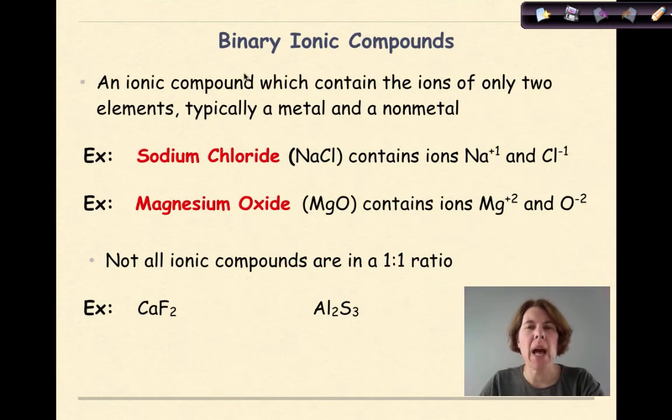Now let's talk about binary ionic compounds. And if you look at the word binary, the prefix bi means two, and then ionic means ion, and then a compound. So basically what we see here is two different types of ions coming together to form a compound. An ionic compound, which contains the ions of only two elements, typically a metal and a nonmetal. That's not always the case, but typically that's what we're going to see in this course. Here's an example. Sodium chloride, NaCl, will contain the ions sodium and the chloride ion. So Na plus one, it's lost its valence electron. Chlorine minus one, it's gained a valence electron to get its full octet. Another example is magnesium oxide, or MgO, which contains magnesium ions and oxygen ions.